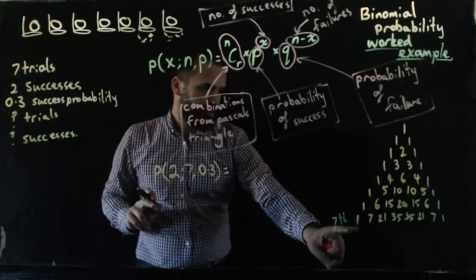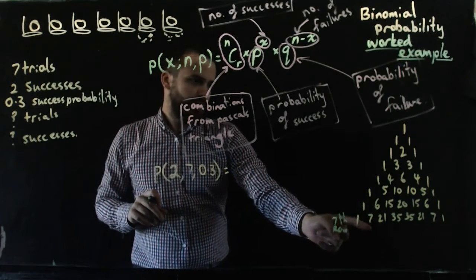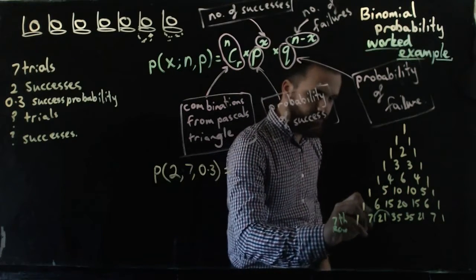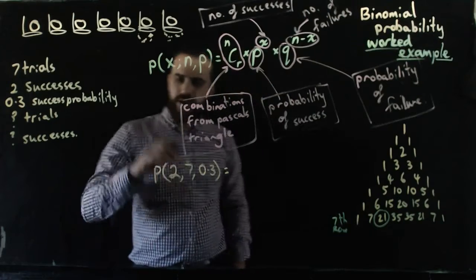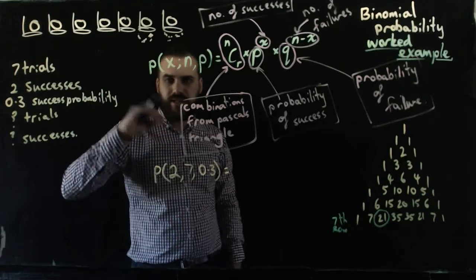And then this is the combinations for zero successes, combination for one success, combination for two successes. So there are 21 different ways that these can be arranged so that you get exactly two baskets.